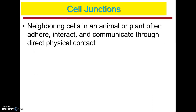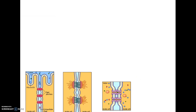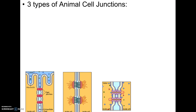The last thing we're going to talk about are cell junctions — connections between cells. We'll come back to junctions when we talk about cell communication. There are three kinds of junctions in animal cells specifically, and I have little animated pictures to help clarify them.